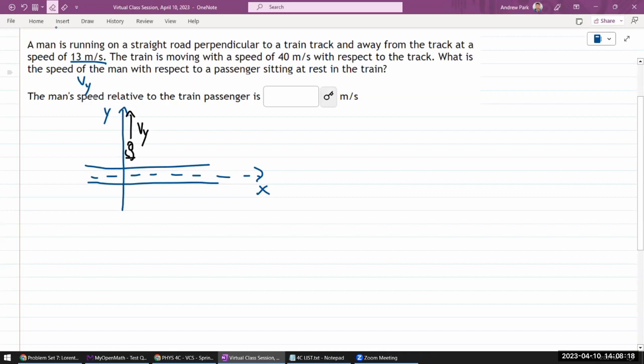The train is moving with some speed v_x with respect to the track. What is the speed of the man with respect to a passenger sitting at rest in the train? Oh, I guess this is a relatively simple question.